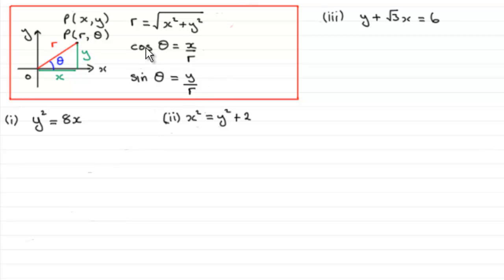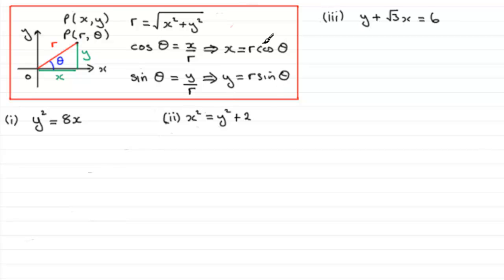We're going to be using these two equations. If we multiply both sides by r, we get x equals r cos theta. And similarly, if we multiply both sides by r, it follows that y equals r sine theta. It's these two equations that we use when we want to change Cartesian equations into polar form. We'll also need to use a lot of trigonometric identities, so it's a good idea to be familiar with them.